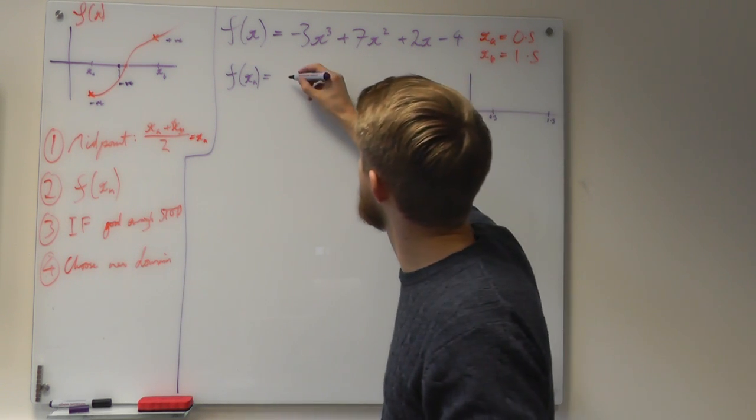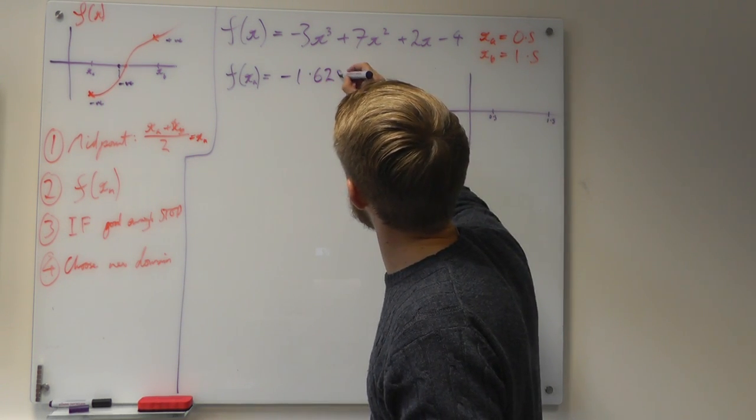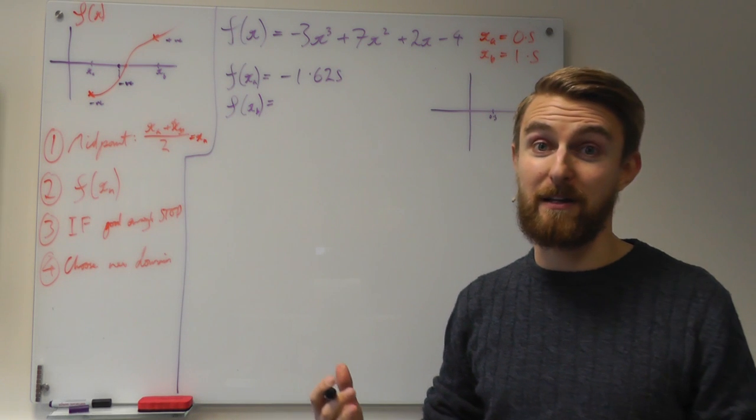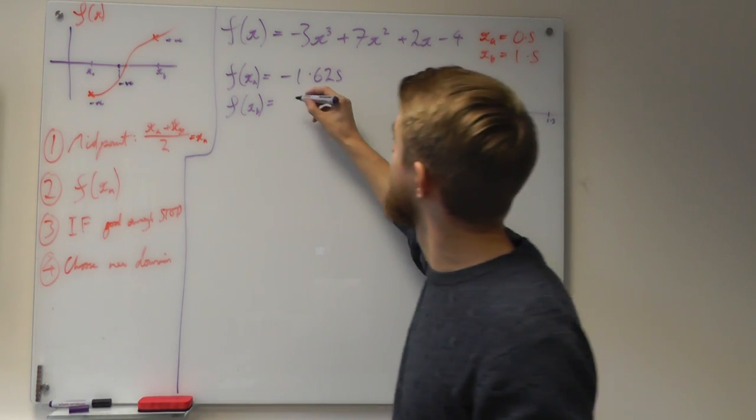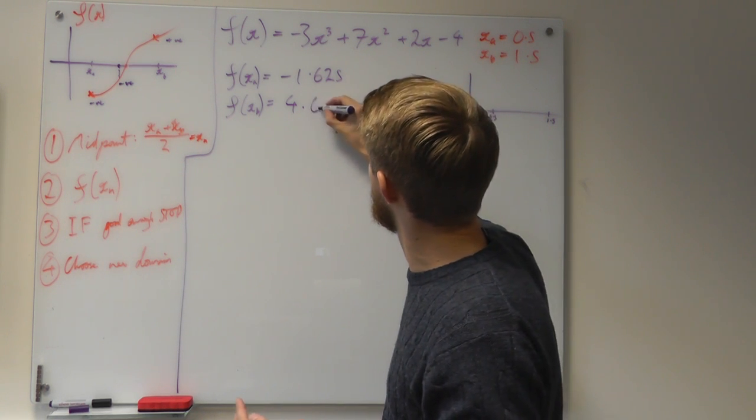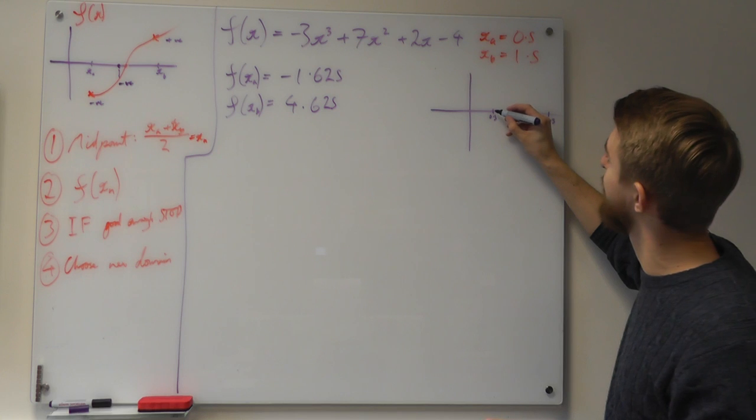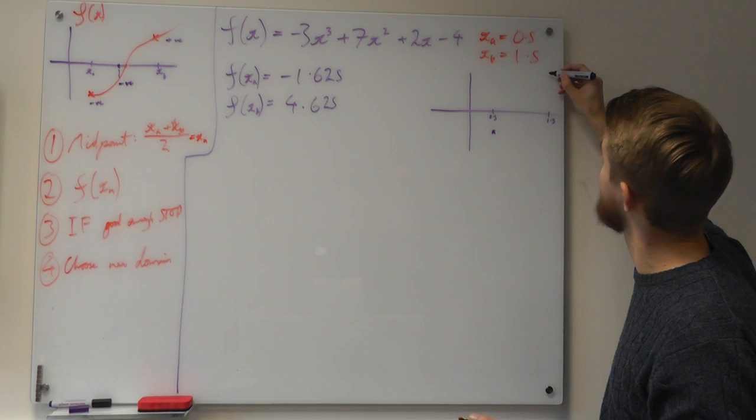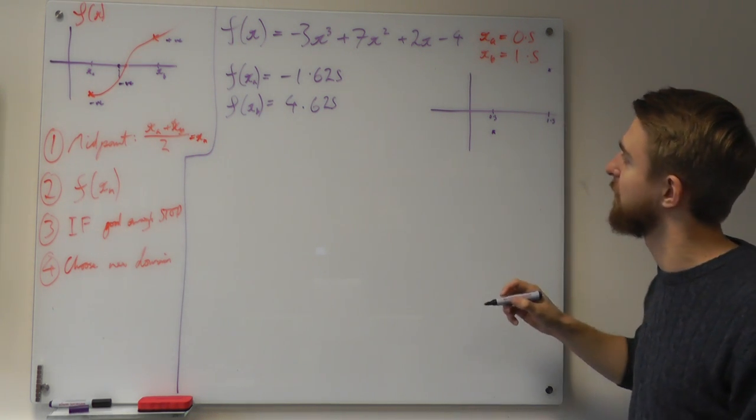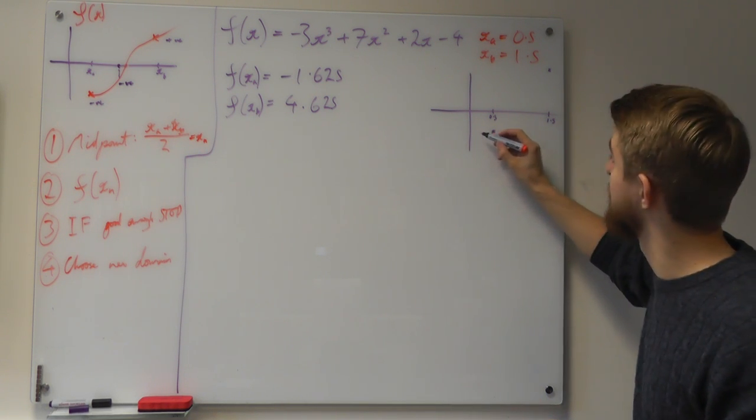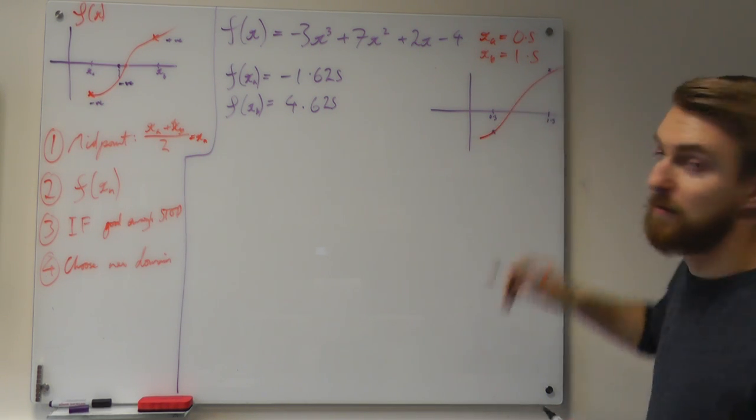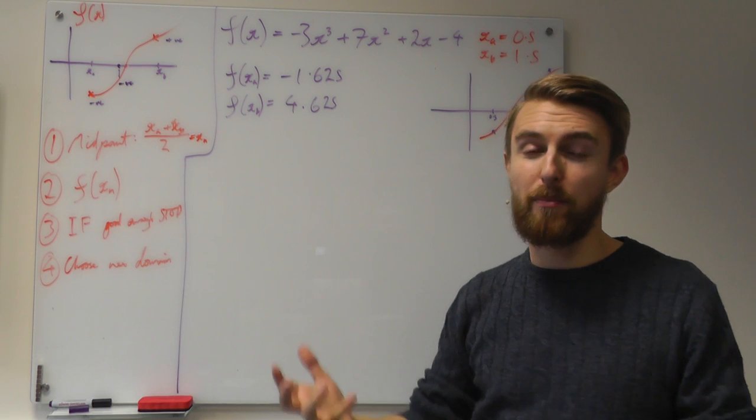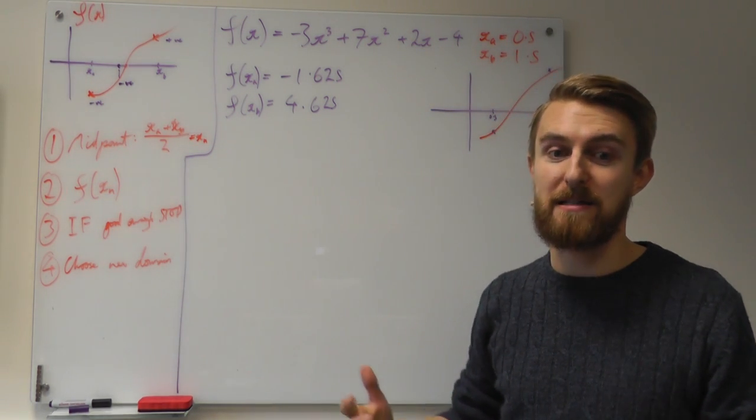We just check it into the function. f of xa equals, so we put 0.5 in wherever we've got an x, and that gives us a value of minus 1.625. And f of xb gives us a value of, we're expecting it to be positive otherwise there wouldn't be a root there probably, is 4.625. So already we can put some points in our graph and show that this is minus 1.625, and this one's up here is plus 4.625. So maybe our function is going to go through these points something a bit like that. We've done all the preparation work, now we can get into the iterative method of the bisection method.